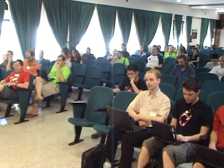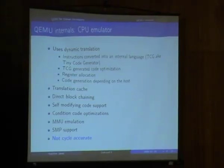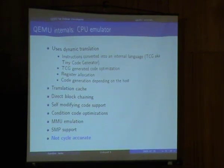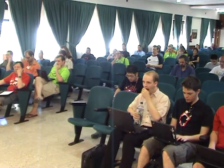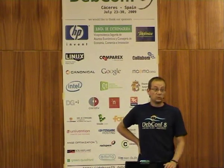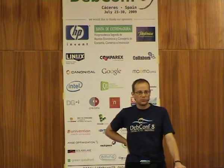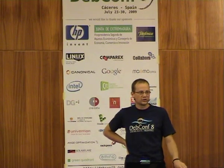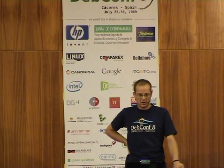How does QEMU work? To achieve reasonable performance, QEMU uses dynamic translation. The instructions from the CPU you want to emulate are converted — dynamically translated — only just before executing them, into an internal language. Then there is a code optimization path: register allocation is done on this language, and the code is then generated for the host CPU. To improve performance, since the same code is often executed many times, there is a translation cache so translation is done as few times as possible.